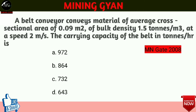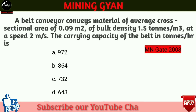A belt conveyor conveys material of average cross sectional area of 0.09 meter square, of bulk density 1.5 ton per meter cube, at speed 2 meter per second. The carrying capacity of the belt in ton per hour is. Question में average cross sectional area = 0.09 m², bulk density = 1.5 ton/m³, speed = 2 meter per second दिया है।